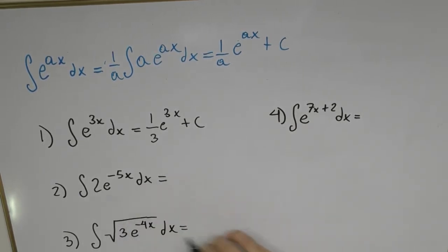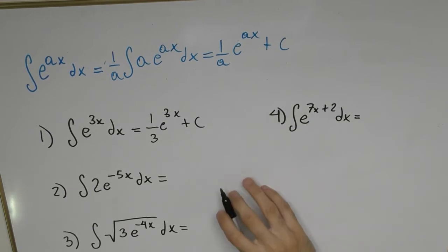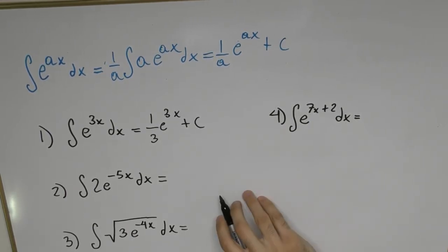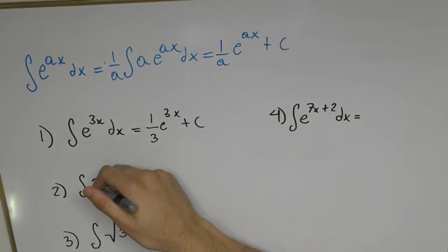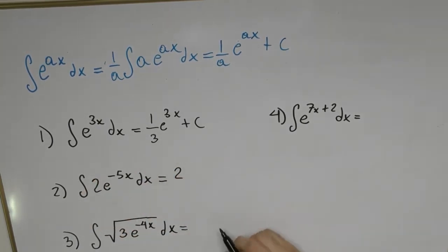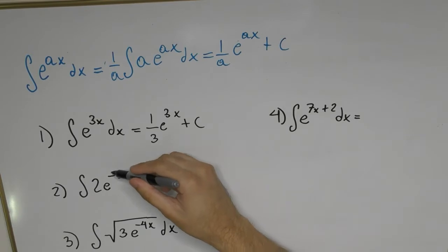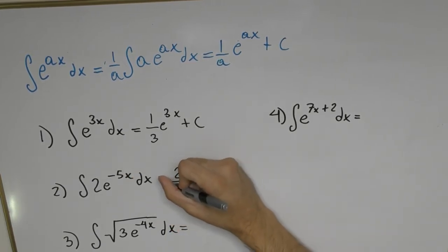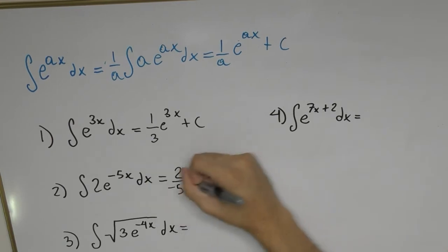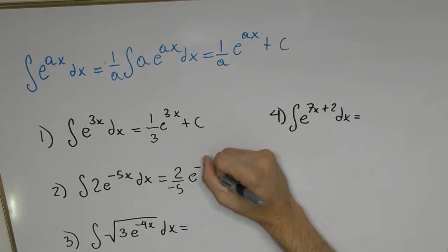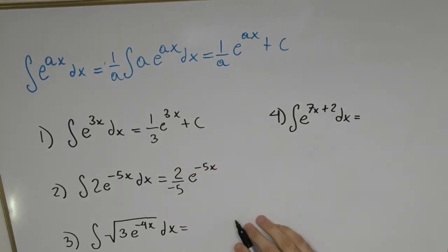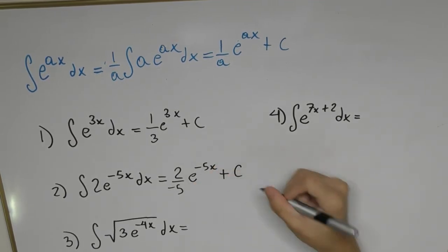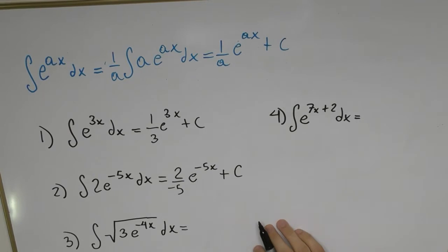Now a more complex example: the integral of 2 times e to the minus 5x. We leave the factor of 2 intact, divide by the constant in front of x which is minus 5, and leave the expression as e^(-5x) + c, with the extra factor out front.